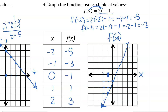2 times 1 is 2, minus 1 is 1. So when x equals 1, y — or f of x — equals 1. f of 2 is 2 times 2 minus 1, which is 4 minus 1, equals 3. That's how we use a t-table to graph a linear equation.